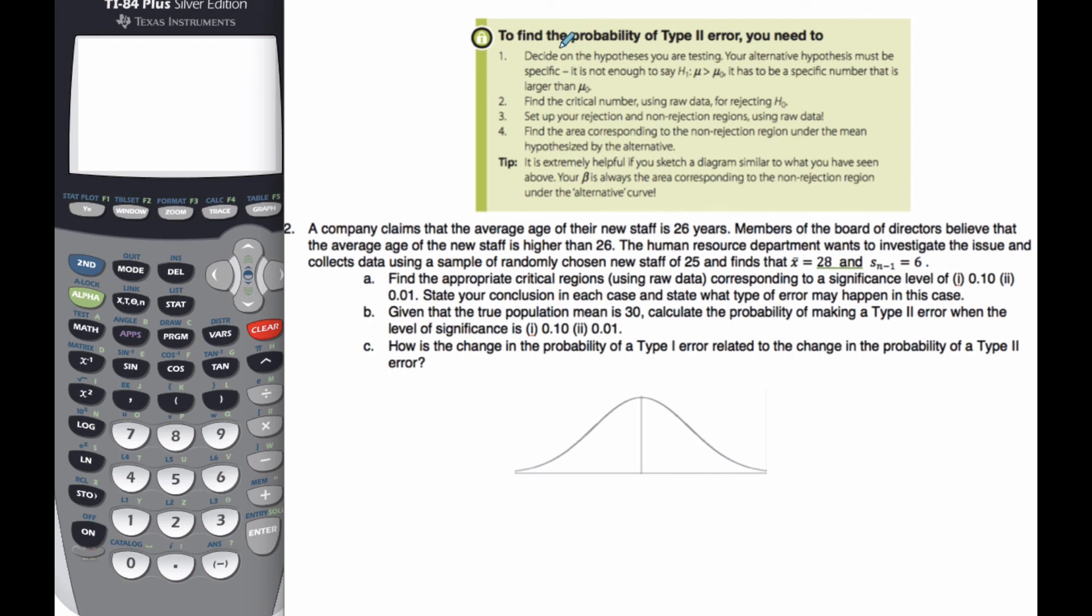In this problem we're working on finding the probability of Type 2 errors. A company claims the average age of new staff is 26, so μ = 26. Members of the board of directors believe the average age of new staff is higher than 26, so this is my null hypothesis and my alternative hypothesis is μ > 26.